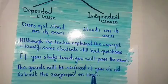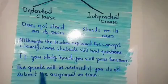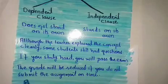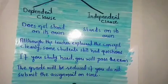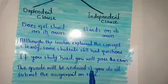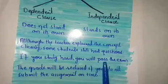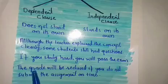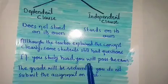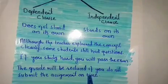'The grade will be reduced if you do not submit the assignment on time.' Here the independent clause is written first, then the dependent clause. When written this way, there is no need to add a comma. If we write the dependent clause first, we need to add a comma and then the independent clause. So 'the grade will be reduced' is our independent clause, and 'if you do not submit the assignment on time' is our dependent clause.